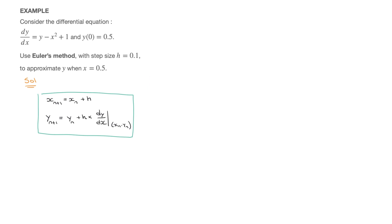The whole idea behind these formulas is that they allow us to start from the initial condition — which we can write as the point (0, 0.5) — and work our way up to x equals 0.5, getting the corresponding approximate value of y. Provided we have the initial condition, the step size, and the differential equation, all we need is a spreadsheet.